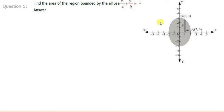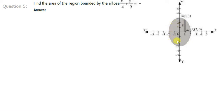So the coordinates of this point will be (2, 0), because the semi-minor axis is 2 and it lies on the x-axis so the y-coordinate is 0. This length is the semi-major axis equal to 3, so the coordinates of point B are (0, 3). Now this ellipse is symmetrical about the x-axis as well as the y-axis. So to find its area we can find the area of a small part in the first quadrant and multiply it by 4 to get the whole area.